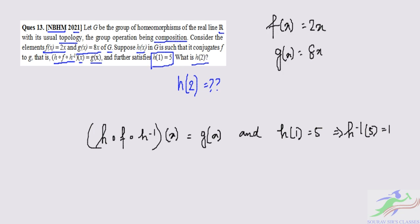Now let us take this composite function h∘f∘h⁻¹. Let us take this at 5, so it is g of 5. Because we have been given g(x)=8x and f(x)=2x.